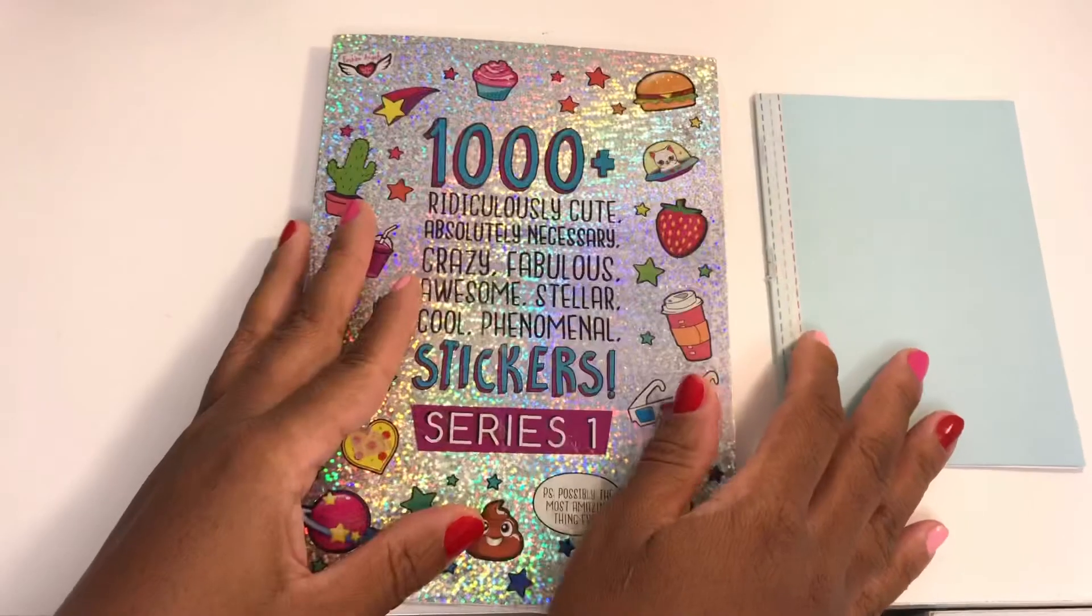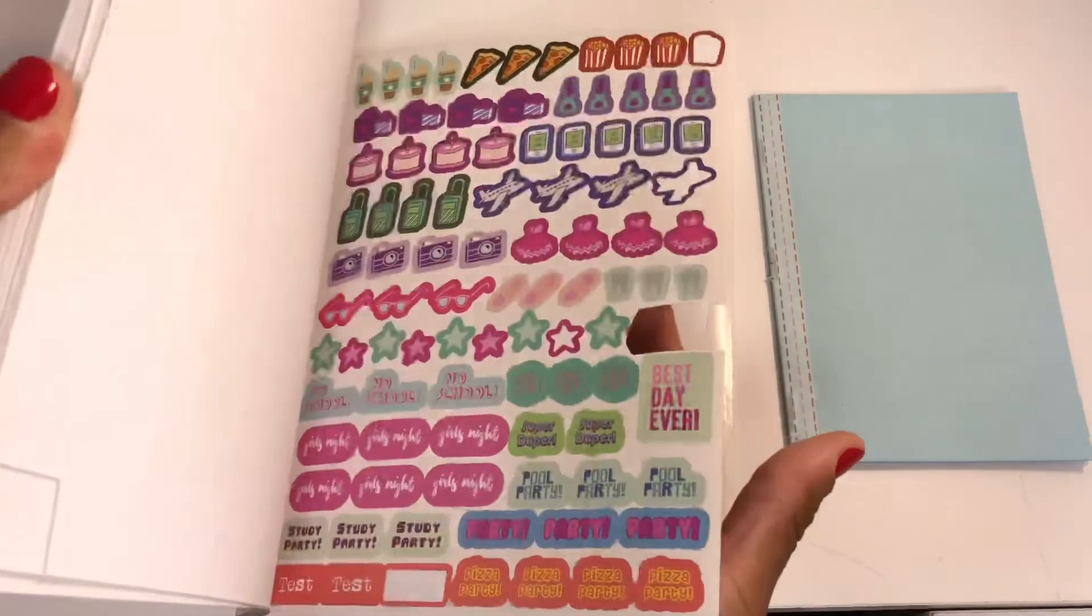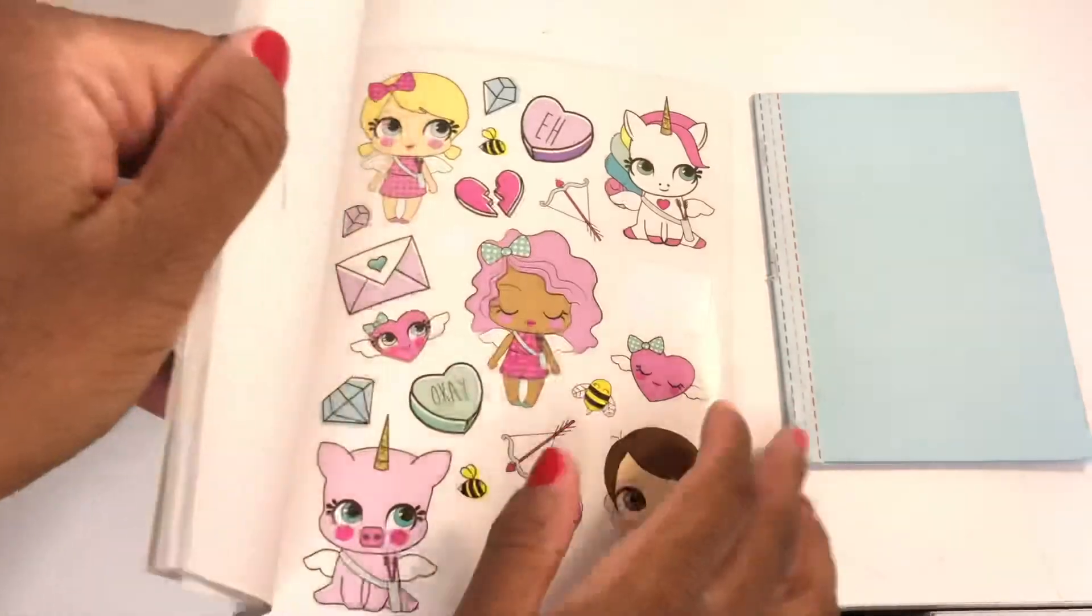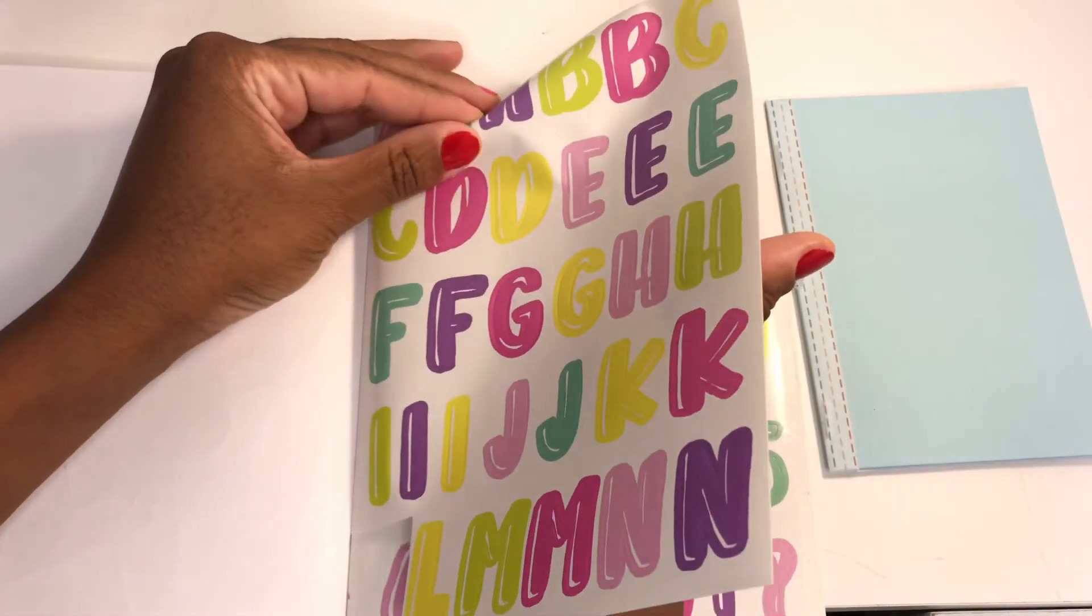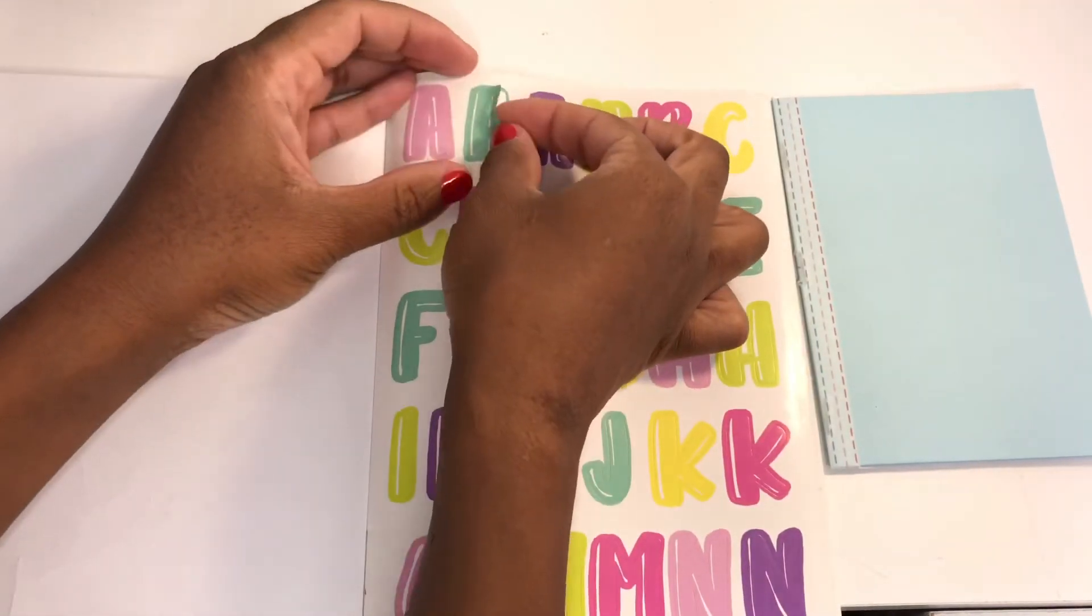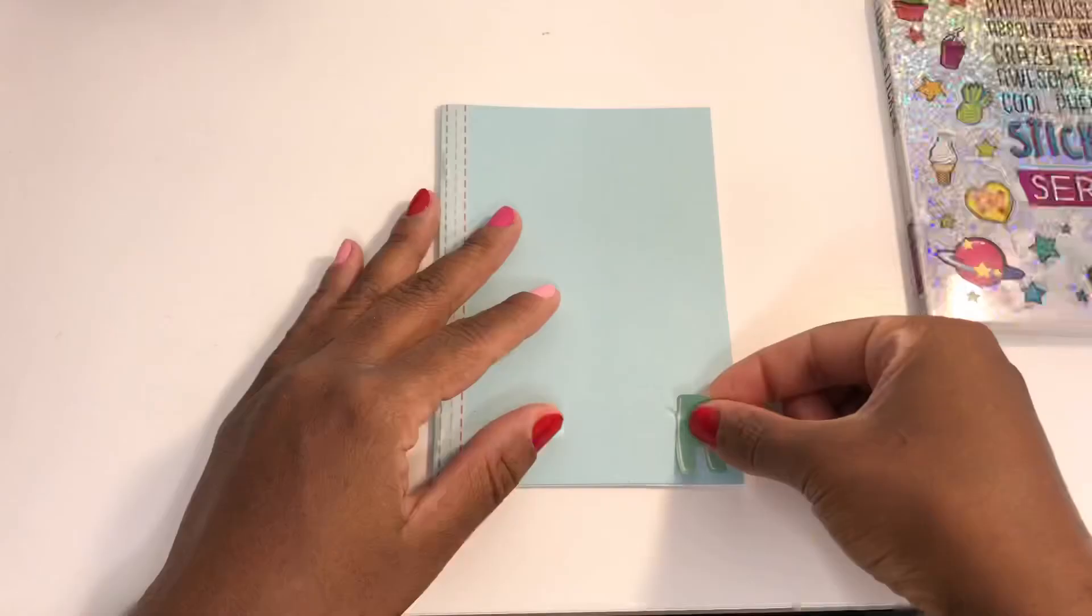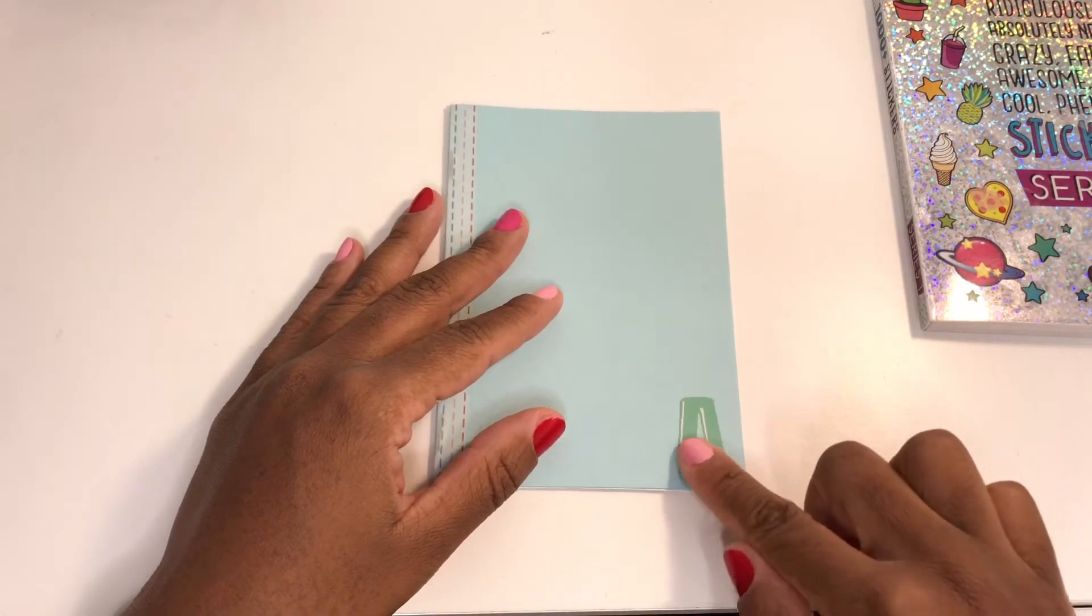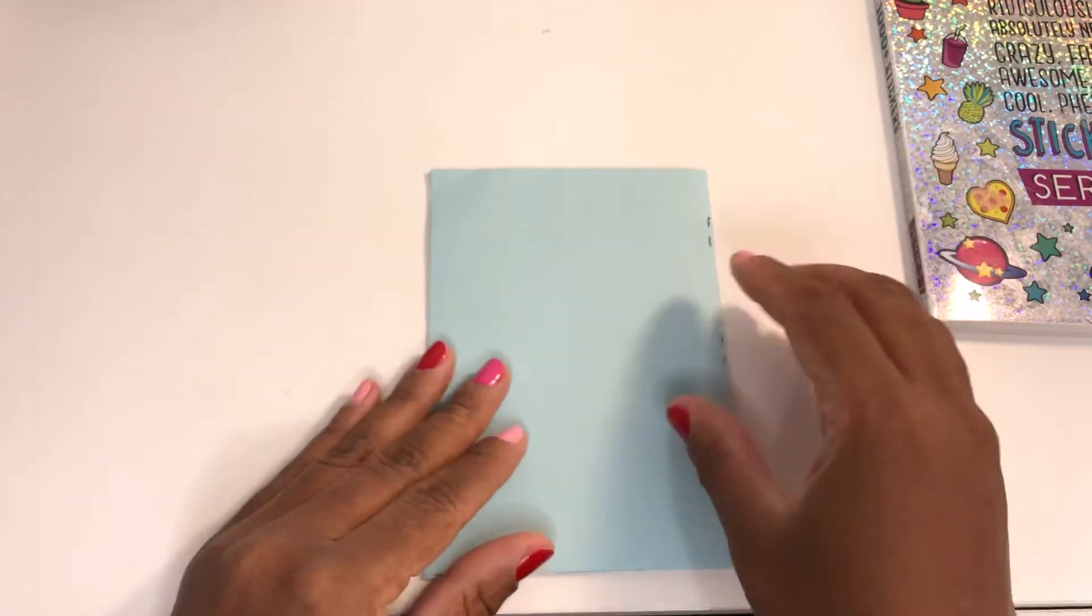Now last but not least, we are going to decorate our daily journal. I'm using this sticker book like I told you—I'm going to link it for Amazon but I bought mine from Walmart. I'm just going to take one of the initial stickers here and place that on the corner of my journal, but you can do whatever you want with yours. You can add stickers, you can paint it, you can draw using markers, you can place a picture of someone or of yourself. I would just encourage you to make it super personal so you'll be more inclined to pick it up and write in it daily.